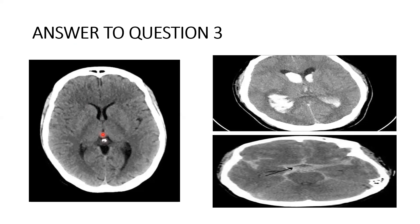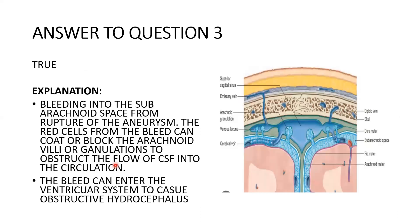From the third ventricle, CSF moves to the fourth ventricle via the cerebral aqueduct. From the fourth ventricle it passes through the two lateral foramina of Luschka and the medial foramen of Magendie. From there it moves to the arachnoid villi, which absorb the CSF into circulation. That is the flow of CSF.